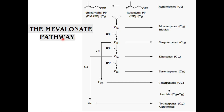In this lecture, we will continue to talk about the major metabolic pathway — the mevalonate pathway, the third major pathway. The compounds in this pathway are formed from building blocks of isoprene units, dimethylallyl pyrophosphate and isopentenyl pyrophosphate, which are formed from mevalonic acid, which itself is formed from acetyl-CoA.